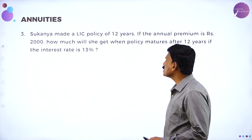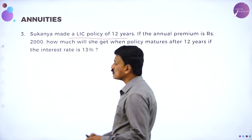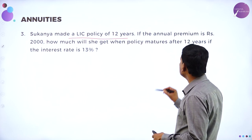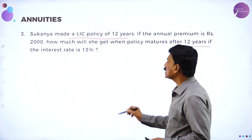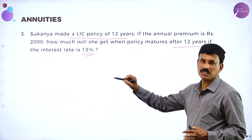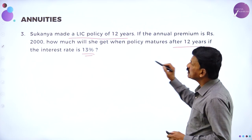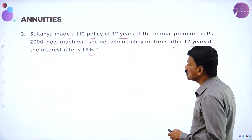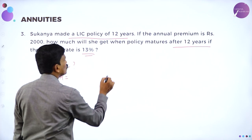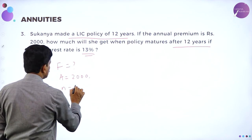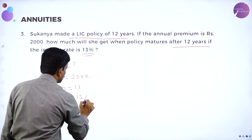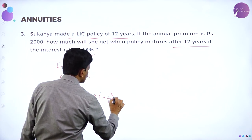Sukanya made an LIC life insurance corporation policy of 12 years. If the annual premium is rupees 2000, how much will she get when the policy matures after 12 years if the interest rate is 13 percent? A equals 2000, N equals 12 years, and I equals 0.13. The formula is F equals A into (1 plus I) to the power of N minus 1, divided by I. Substituting: F equals 2000 into (1.13) to the power of 12 minus 1, divided by 0.13.